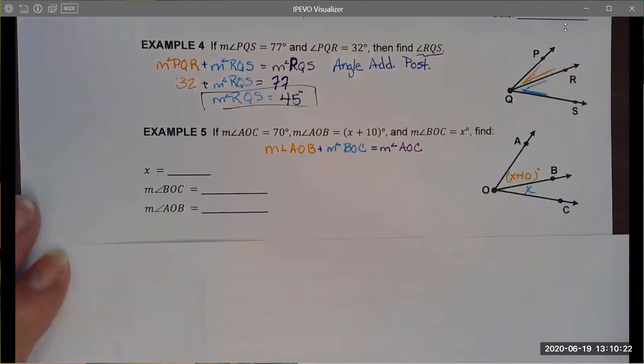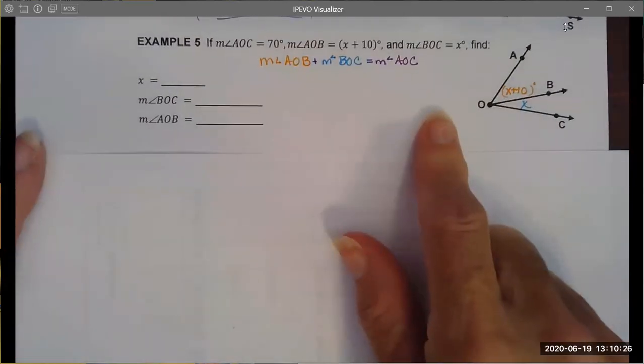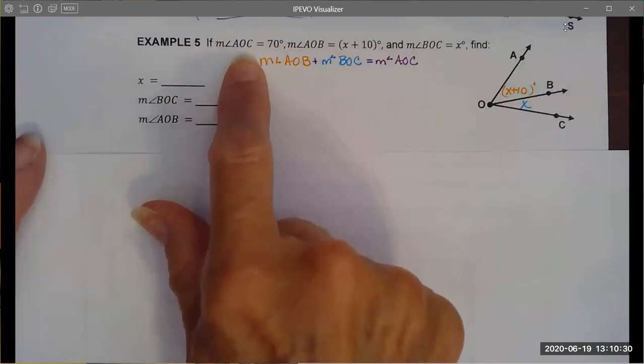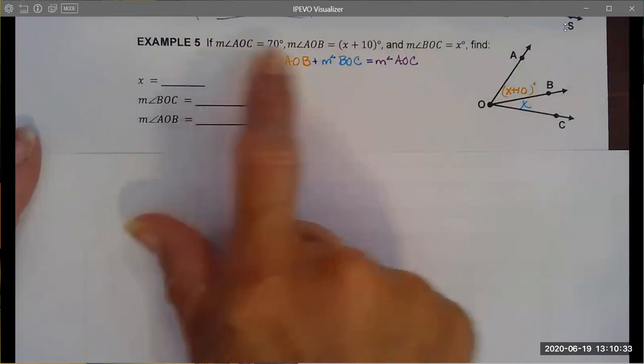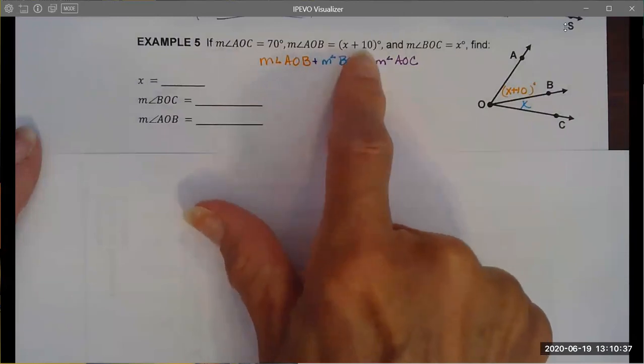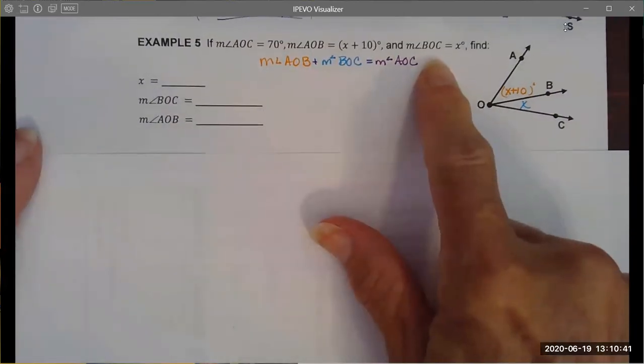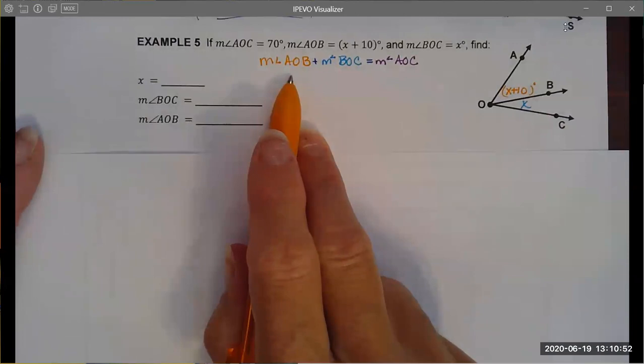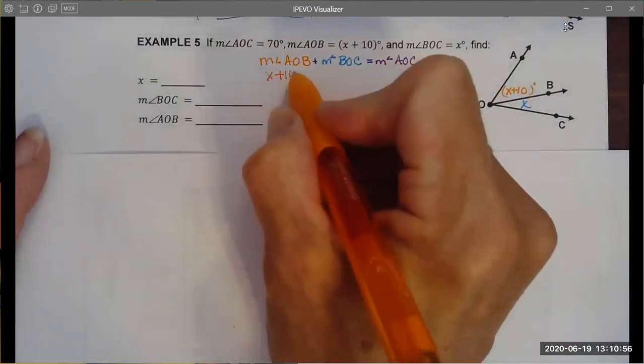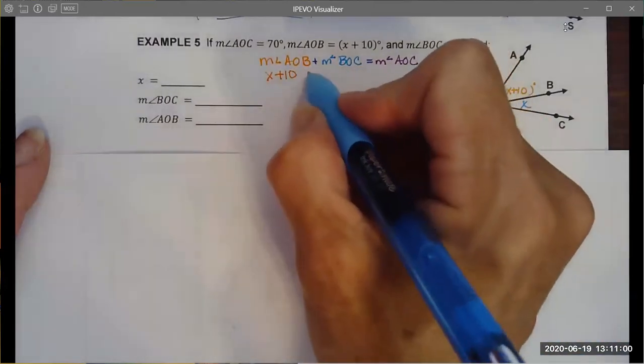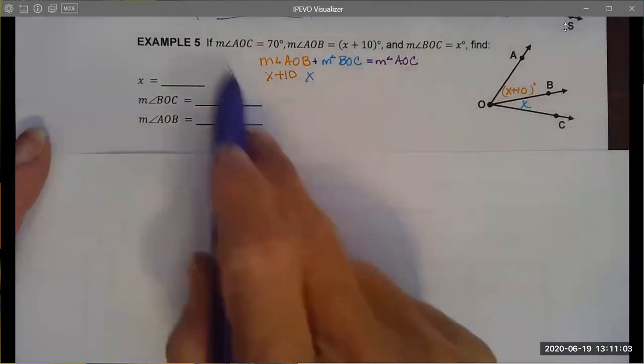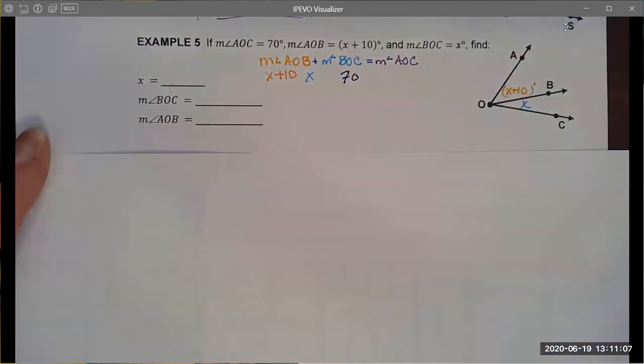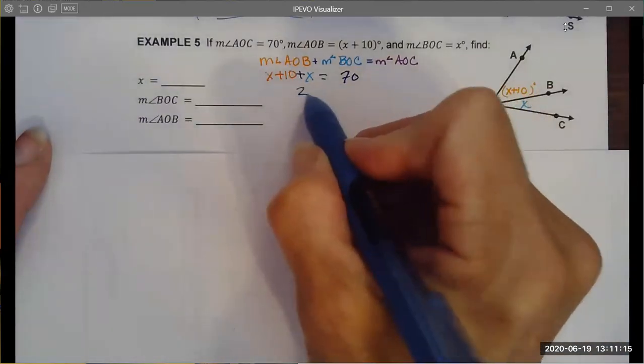This is barely one of those but it is a slightly more interesting example. Again I am given the measure of the whole thing, angle AOC. I'm also given a part, the measure of angle AOB in algebraic terms, x plus 10, and then I'm additionally given the measure of BOC. So again because I have two parts and a whole I'm going to use the angle addition postulate. I'm going to substitute the representation for angle AOB which was x plus 10, add to that the algebraic representation for BOC which was x, then put the measure of the entire thing which was 70.